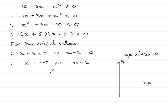the critical values were -5 and 2, and that's where the y value is equal to 0. And that is where this particular graph would cross the x-axis. So mark in -5 and 2.